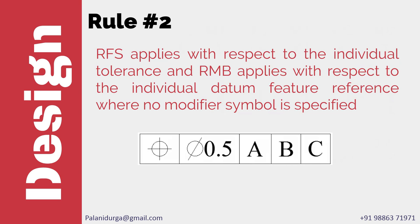Rule 2: Regardless of feature of size applies with respect to the individual tolerance, and regardless of material boundary applies with respect to the individual datum reference feature, where no modifier symbol is specified. Here, the geometrical tolerance has no modifier symbol — this is the default condition. We have three datum references with no modifier symbols either, so this is also a default condition. When there are no modifier symbols in either the tolerance segment or the datum segment of the feature control frame, it is called regardless of feature of size and regardless of material boundary, which is the default condition stated in Rule 2.